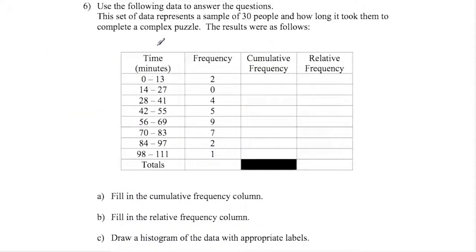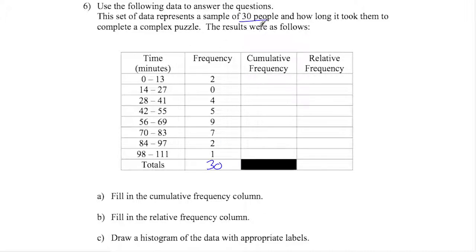Moving on now to diagrams. We first start with histograms. These intervals are already laid out for us, evenly spaced, so it's going to be easier to graph — I don't have to calculate bin size and width. Cumulative frequency is just all the frequencies added together. If I add these, I get 6, 11, 20, and 30 — which it does say there are 30 people, so the total is 30.